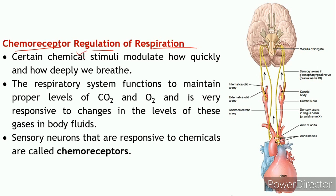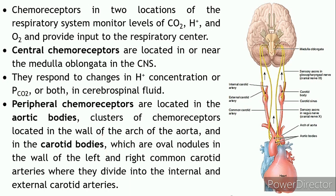The next type of control is chemoreceptor regulation. Chemical stimuli such as carbon dioxide, oxygen, and H⁺ levels can alter breathing rate and depth. Sensory neurons responsive to these chemical levels are known as chemoreceptors, located at two positions: central chemoreceptors in the medulla oblongata monitoring H⁺ and CO₂ levels in the CNS, and peripheral chemoreceptors. The peripheral chemoreceptors are located in the aortic bodies - clusters of chemoreceptors in the arch of the aorta.